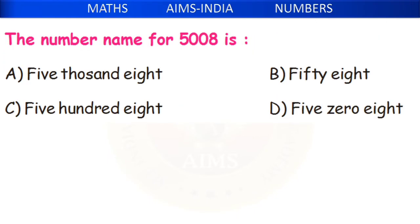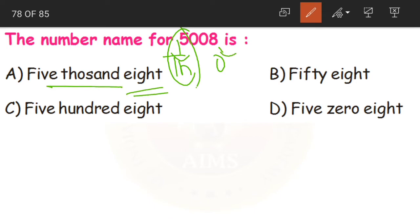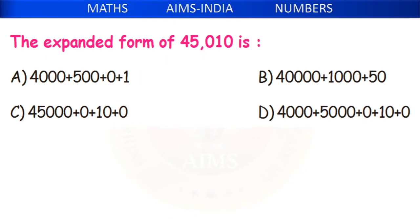Next: the number name for 5,008 is? 5 is in the thousands place and 8 is in the ones place. 5 in thousands place is 5,000 and 8 in ones place is 8. So option A, 5,008, is the correct answer.